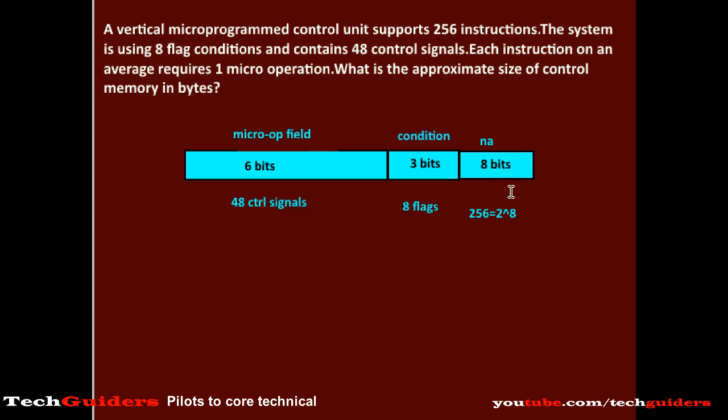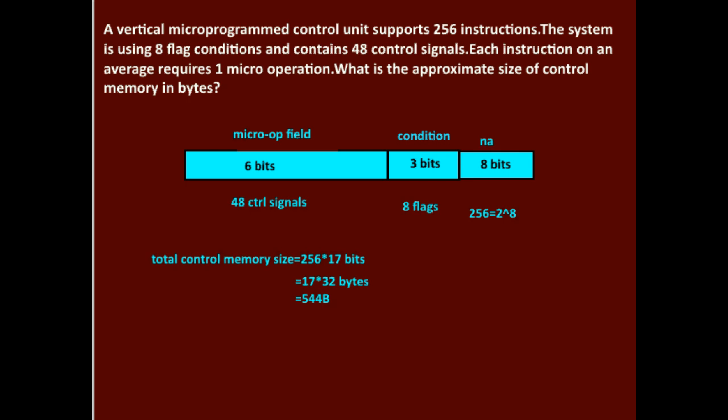Hence, the total number of bits in each micro-instruction is 9 plus 8, which equals 17 bits. There are 256 micro-instructions. Thus, the total size of the control memory is 256 into 17 bits, which equals 17 into 32 bytes, which is 544 bytes.